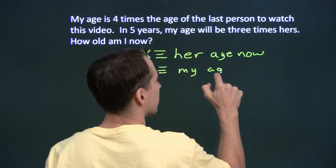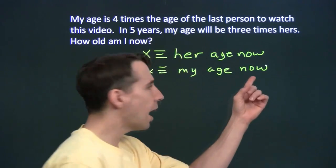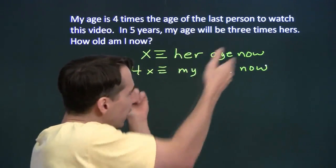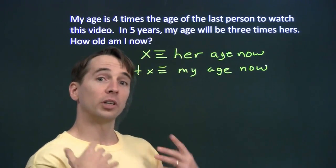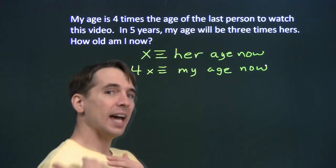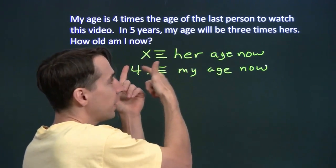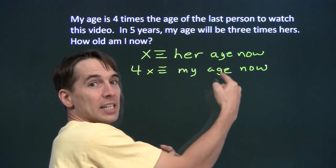And that's nice. Now, notice that I'm writing the now in here with my definition of the variable. The now is very important because we're going to talk about our ages now and our ages in five years. And we want to be clear that the variable stands for her age now.